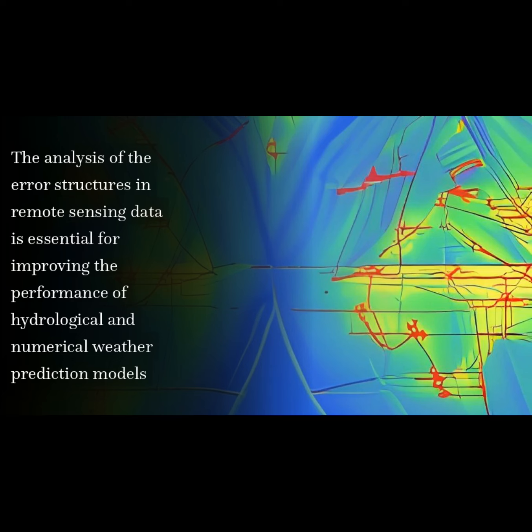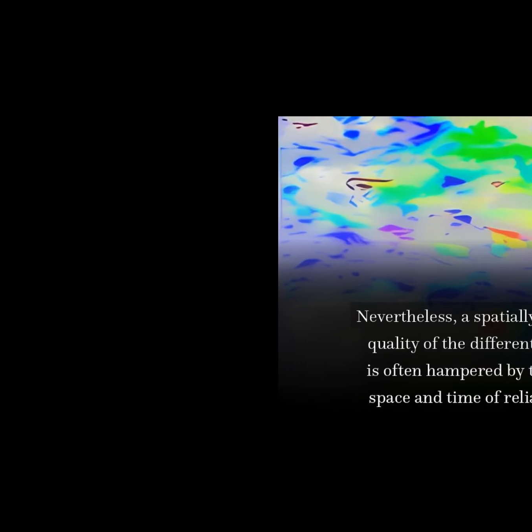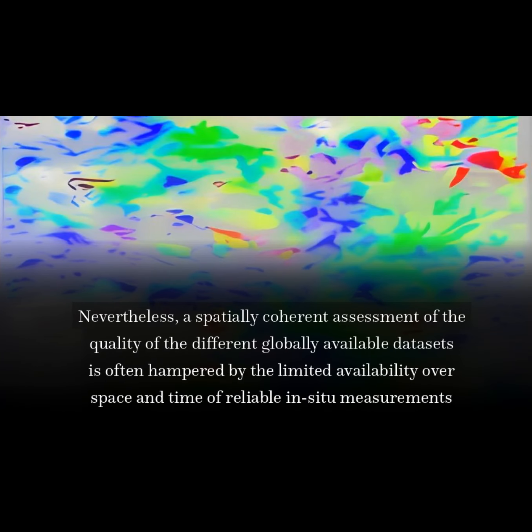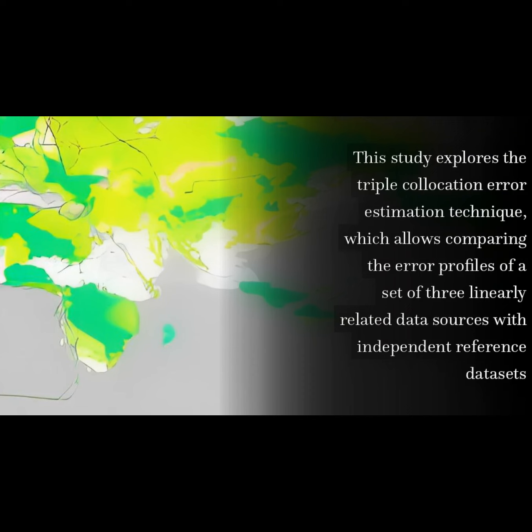The analysis of the error structures in remote sensing data is essential for improving the performance of hydrological and numerical weather prediction models. Nevertheless, a spatially coherent assessment of the quality of the different globally available datasets is often hampered by the limited availability over space and time of reliable in-situ measurements.